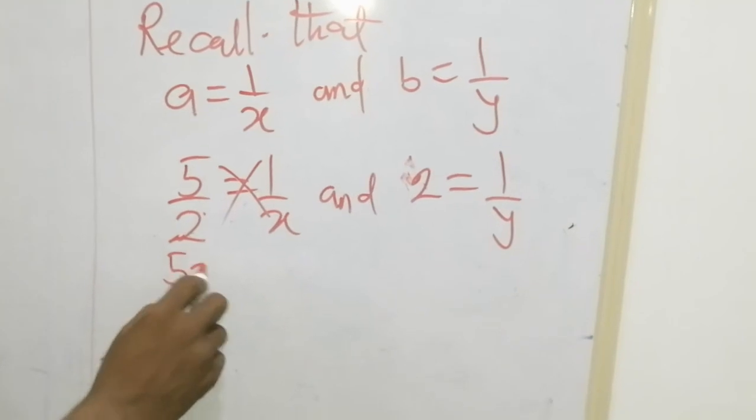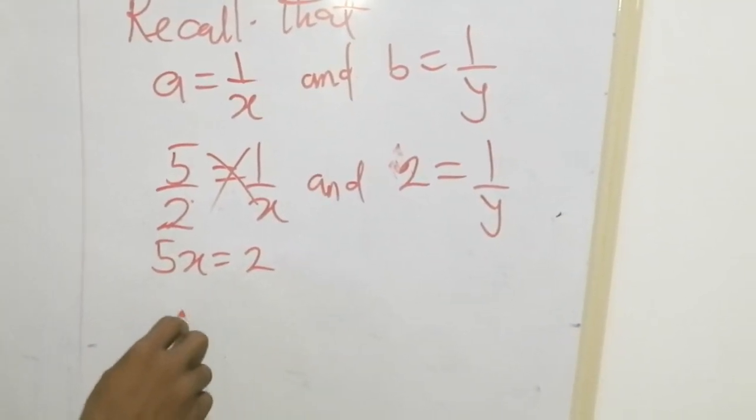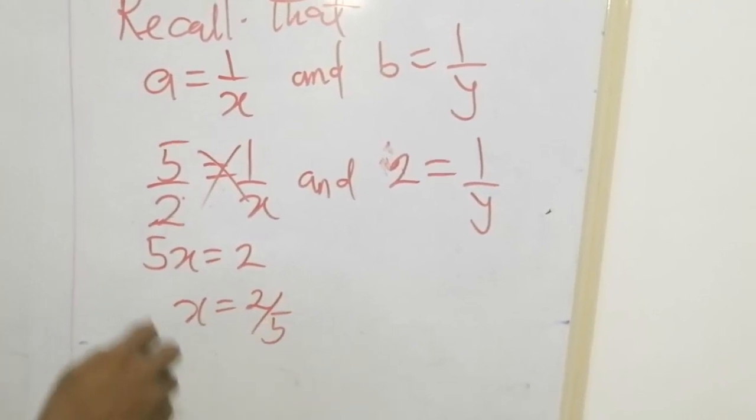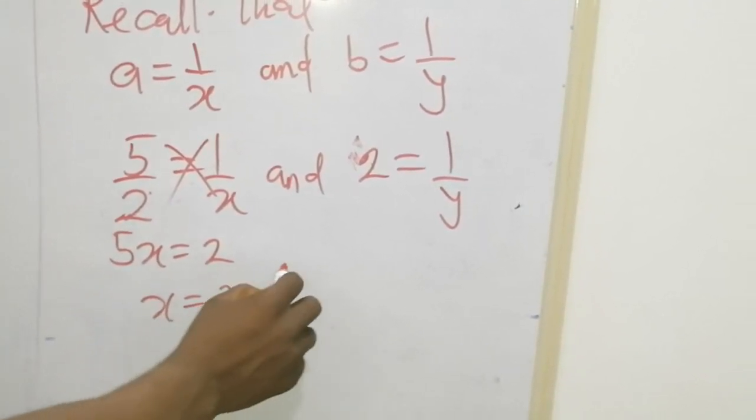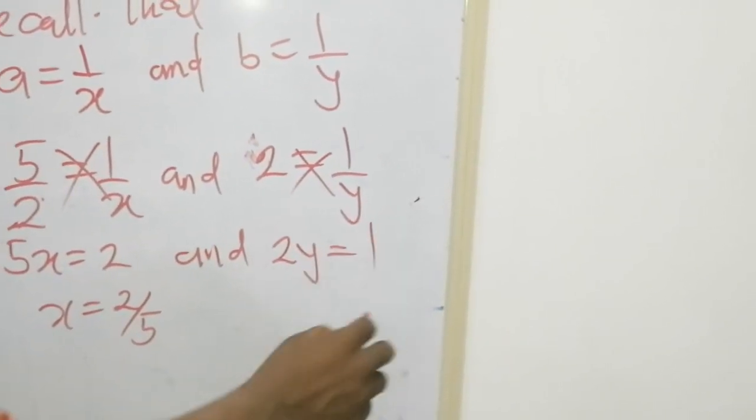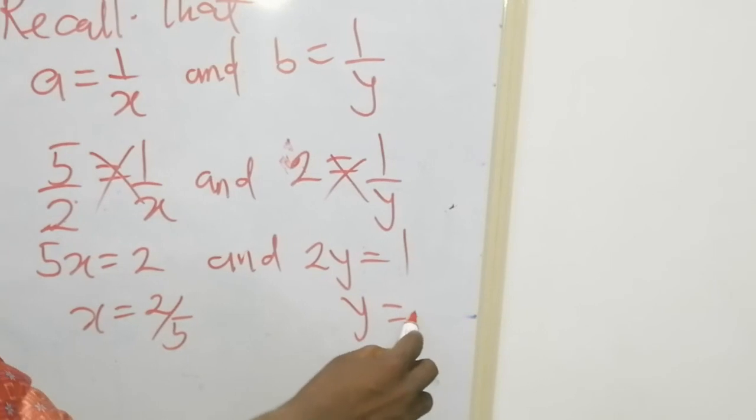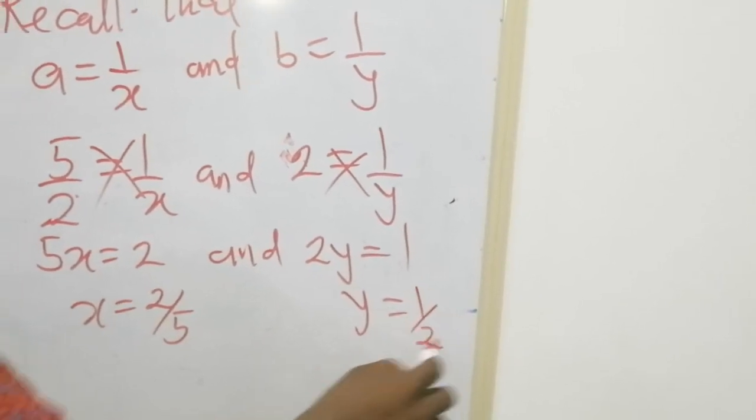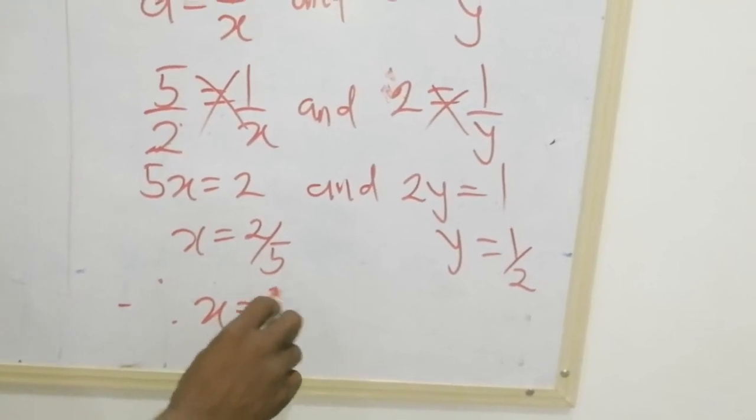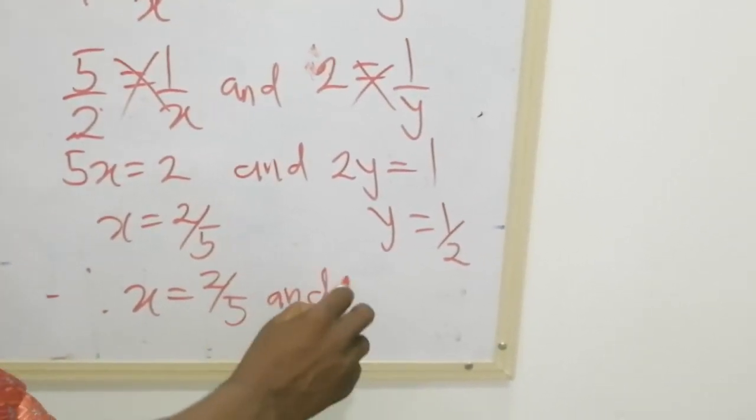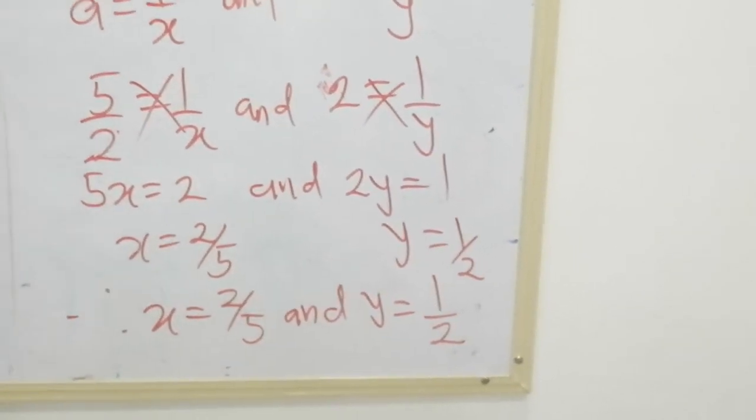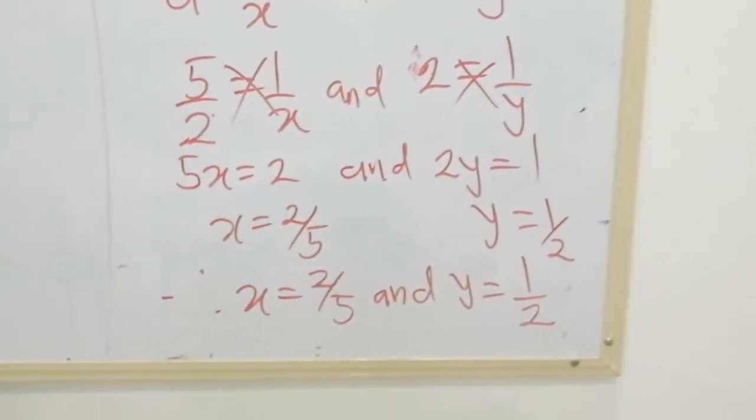Cross multiply, we have 5x equals 2. Then x is equal to 2 over 5. Cross multiply here, 2y equals 1. Then y is equal to 1 over 2. Therefore our original variable x is equal to 2 over 5, and our original variable y is equal to 1 over 2. Thank you and God bless you all.